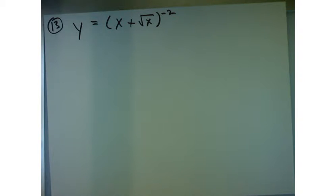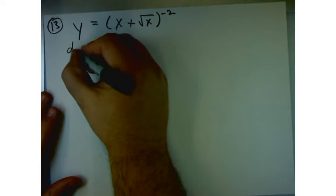Number 13, we're given the function y equals the quantity x plus the square root of x raised to the second power. And it says to ensure your answer use the n-derive on your calculator. So we're supposed to find dy dx.